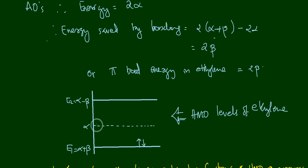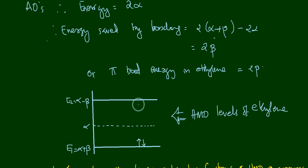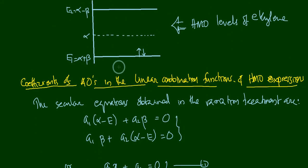In the energy level diagram, e1 = α + β is the lower bonding level, α corresponds to the atomic orbital level, and α − β is the antibonding molecular orbital level. The two electrons occupy the bonding molecular orbital. Now we proceed to calculate the coefficients of the atomic orbitals in the linear combination.